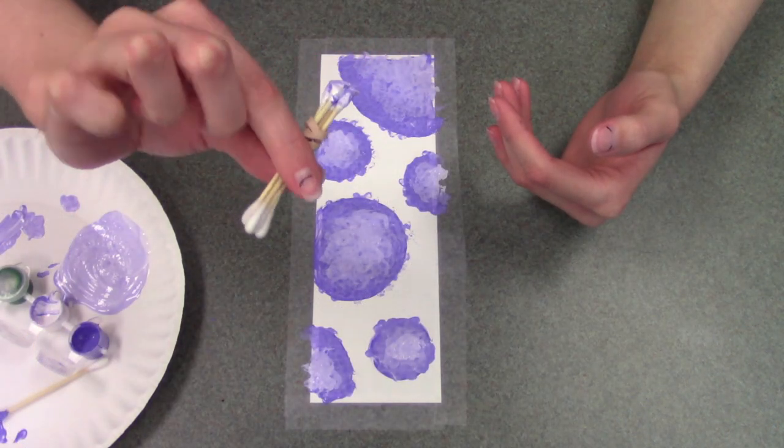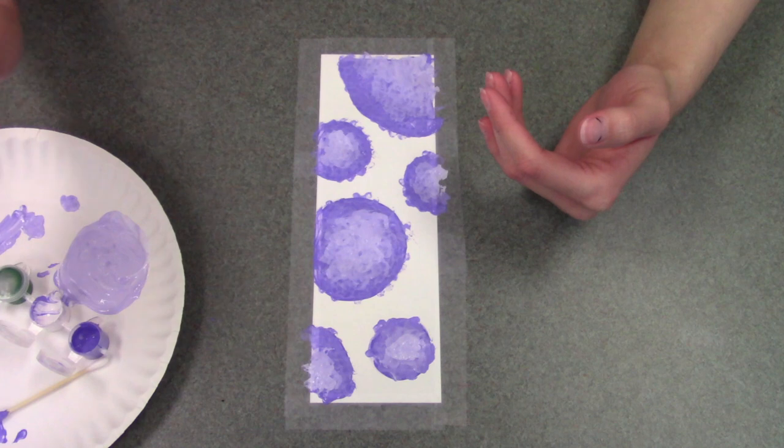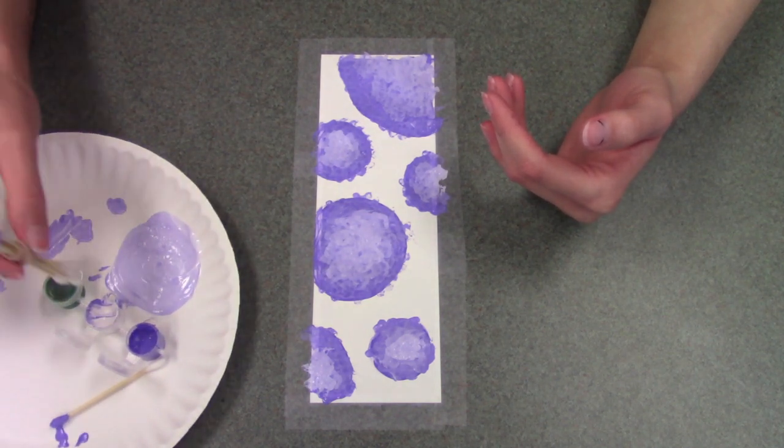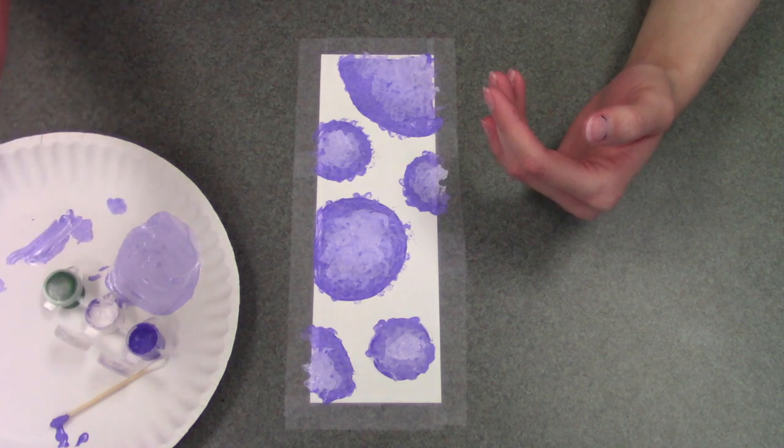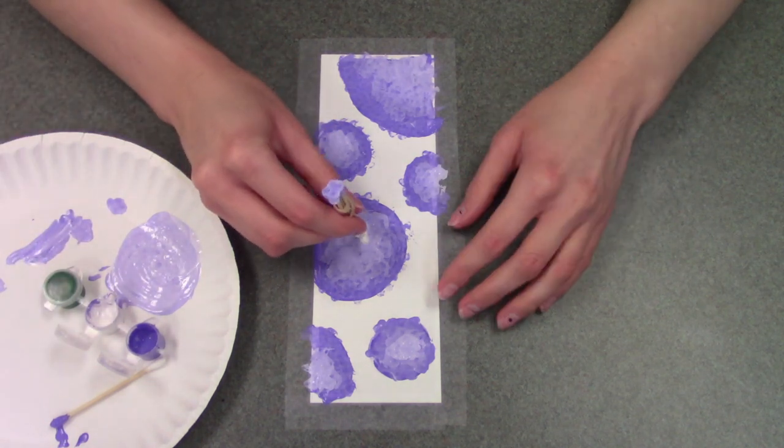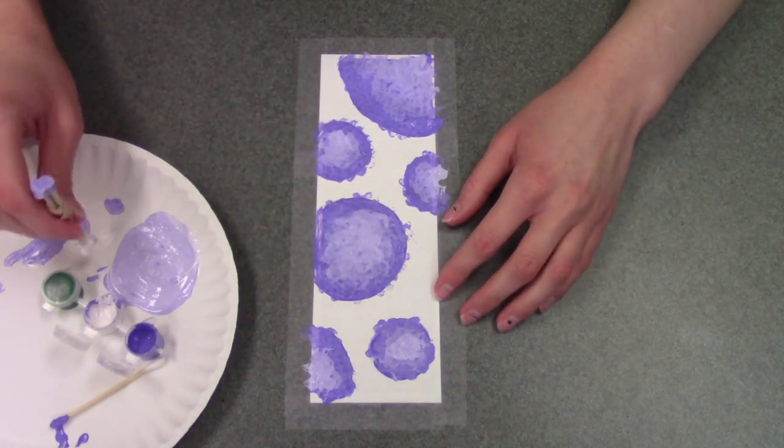Alright, so then once you have all of your purple petals kind of placed as many layers as you want, you're just going to take the dry end of the q-tip bunch and you're just going to take plain white this time and then just kind of dab it around in the middle of the flowers.